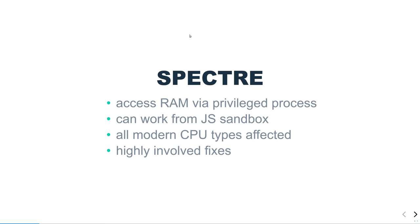Intel, AMD, ARM — pretty much anything. I think the Raspberry Pi's ARM chip is cut down enough that it is not actually vulnerable, but pretty much anything you have in your house right now, if it has a screen and you can type on it, is affected. The fixes for Spectre are a lot more involved, and we will go into those later on.